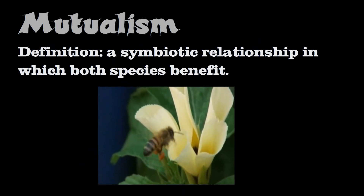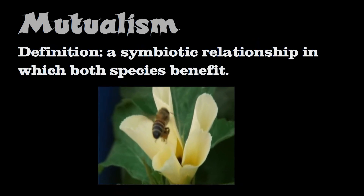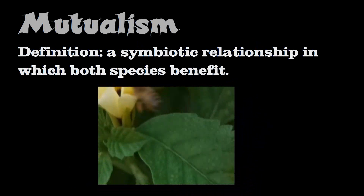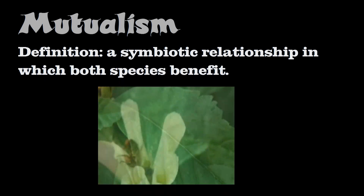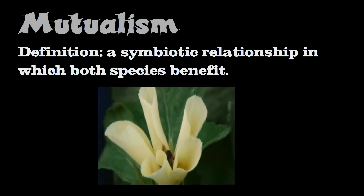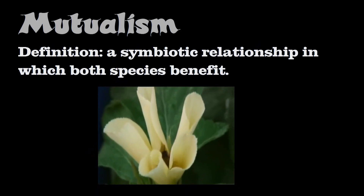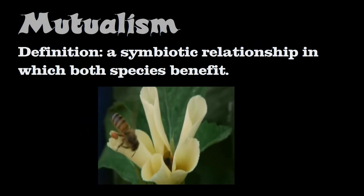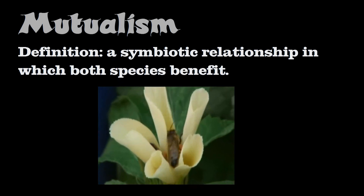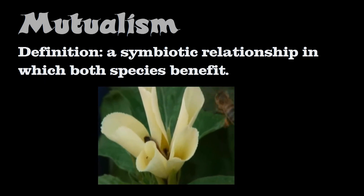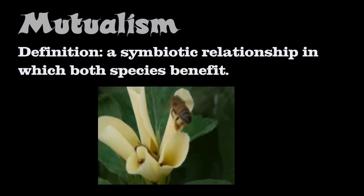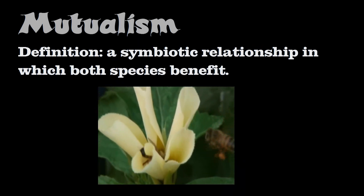Flowers benefit because they require the bees to be pollinators for them. The pollen, which is produced by the stamen — the male reproductive part of the flower — is transferred by the bee from the stamen of the plant to the stigma, which is the female reproductive part, of the same or different flowers. The bee also benefits because they need the pollen for survival.